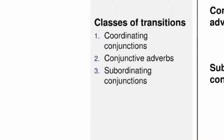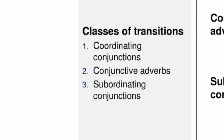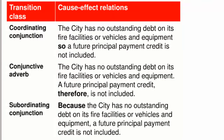Now I'll move on to discussing the three classes of transitions that can be used to signify the relationships we've already discussed. Again, we're going to look at examples from the executive summary for a planning consultant's report to demonstrate how you differentiate among these classes. Look at the table.